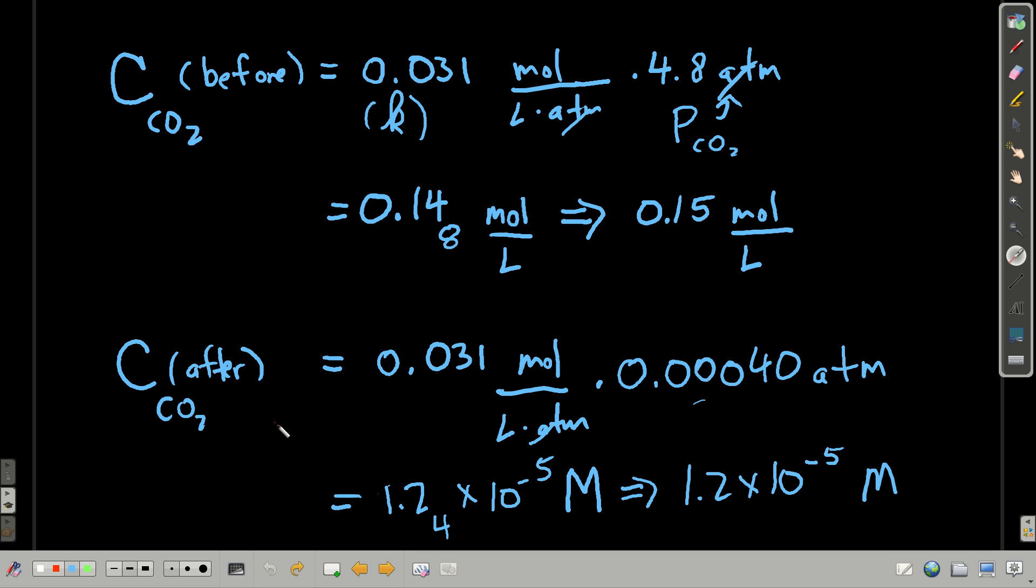After we open it, it opens up, carbon dioxide gas escapes, and all we have is essentially the atmosphere with this many atmospheres as the partial pressure of carbon dioxide above it. Plugging into Henry's Law again, this is K, this is the partial pressure of carbon dioxide in the atmosphere. We get this number, 1.24 times 10 to the minus 5th molar, two sig figs, 1.2 times 10 to the minus 5th molar. And you can see here that it's about four orders of magnitude difference between before we opened it and after we opened it.